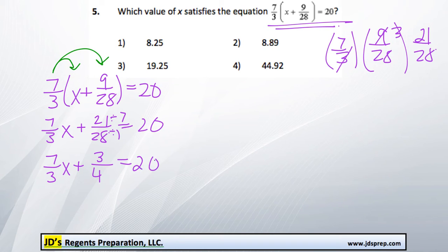So what I'm going to do now is multiply every term here by 12. And the reason I'm doing that is to make these fractions disappear. And I picked 12 because that is the lowest common multiple of 3 and 4.